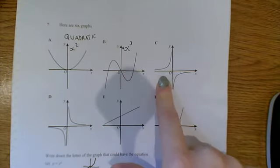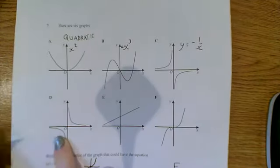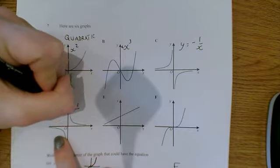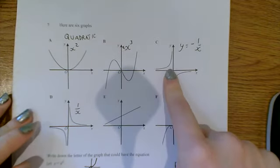C is what we would call a negative reciprocal. So C is the graph of minus 1 over x, so it's kind of the opposite to D, which is 1 over x. So this is a reciprocal. This is a negative reciprocal.